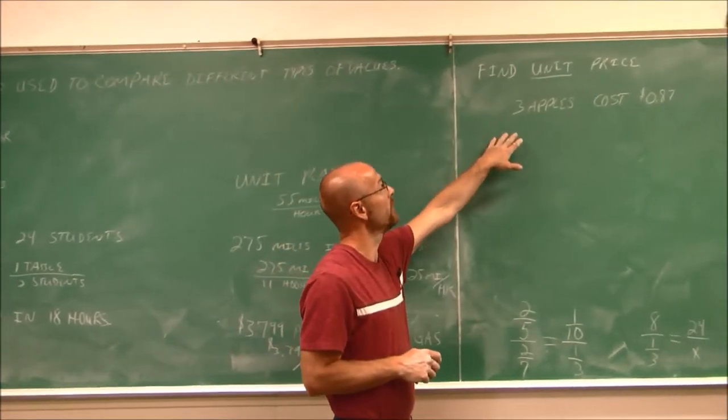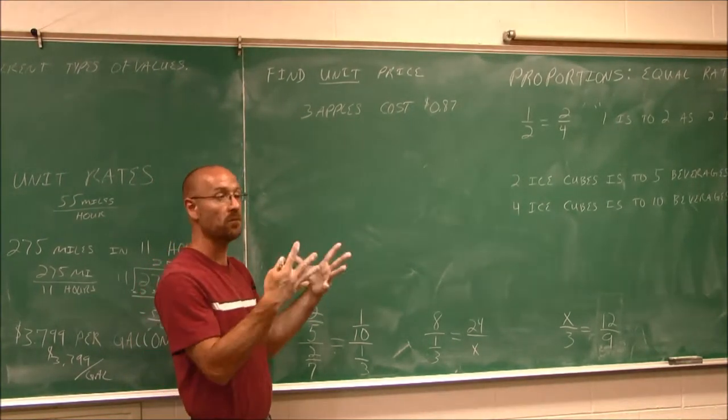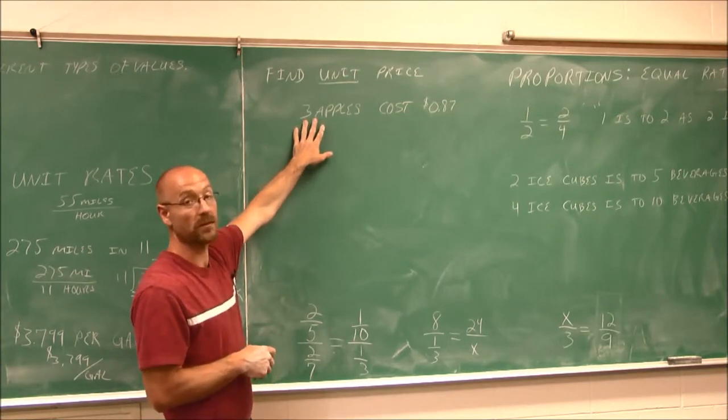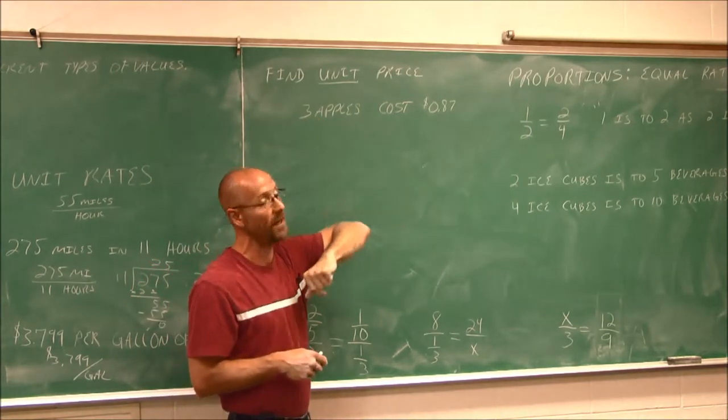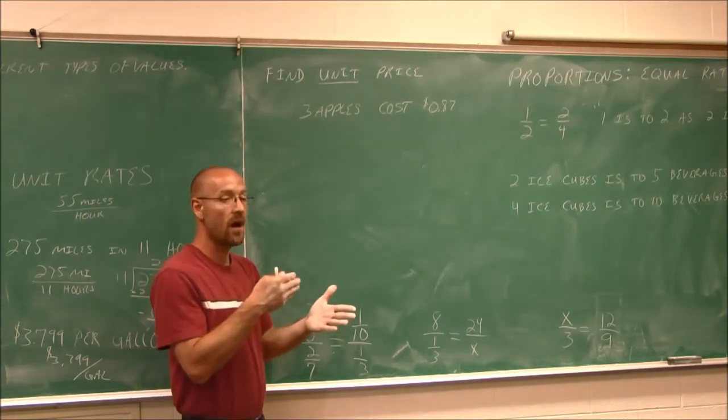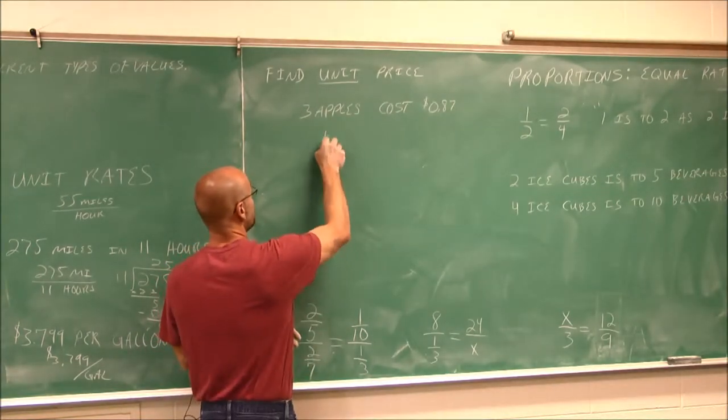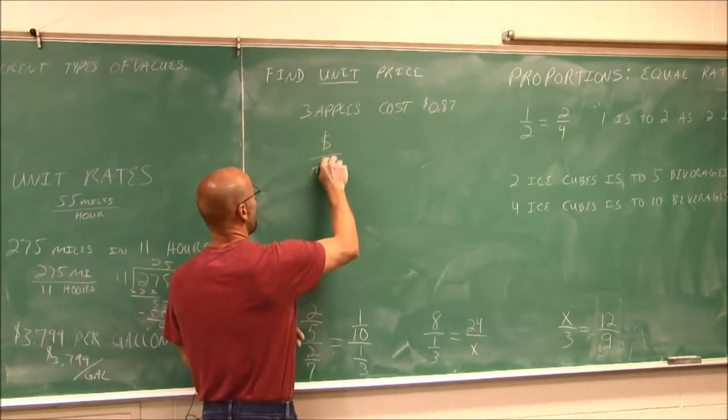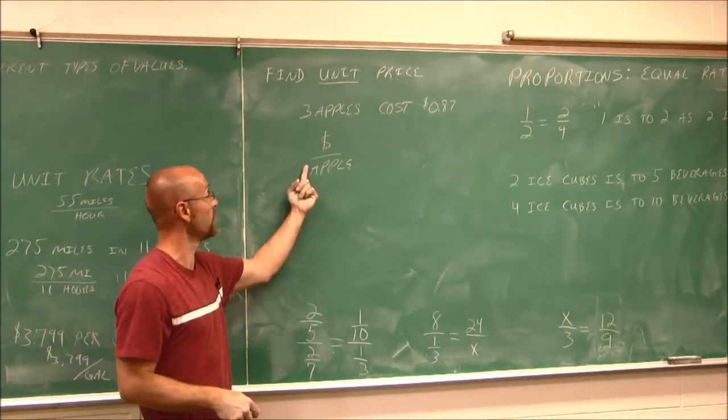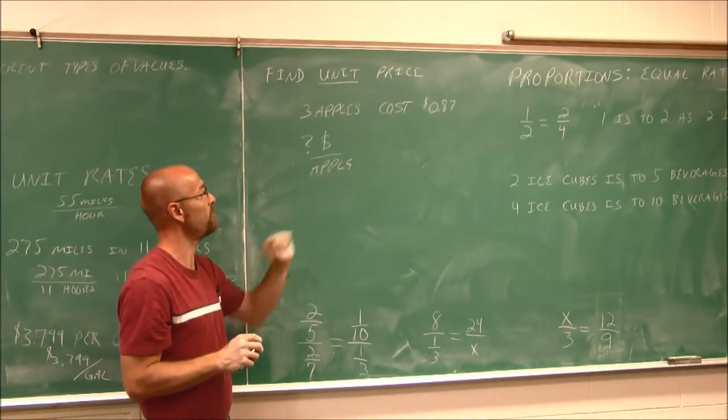What if we want to find a unit price? A lot of times when we go to the grocery store, we can buy things in bulk and we get a better deal. Maybe we go to the store and there's a sale that says three apples cost $0.87. You want to know what the unit price is. And that means, how much are you going to pay per apple? And just by making that statement, it tells me I want a unit rate of dollars over apples, but only one apple. So this is my question. How much money per apple?